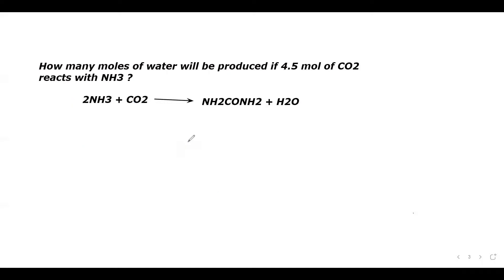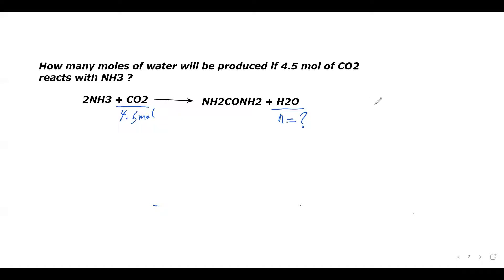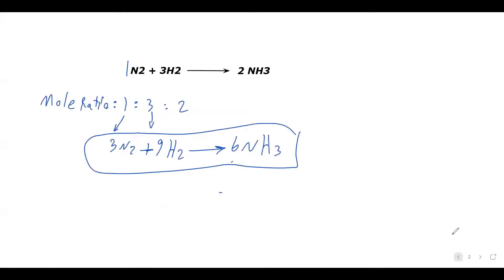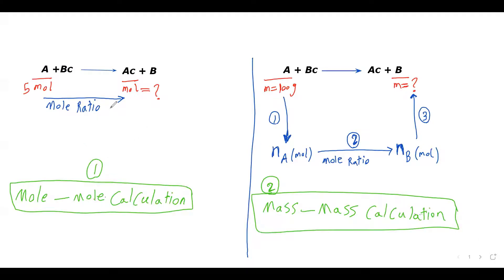Here is the first example. It says: how many moles of water will be produced if 4.5 moles of CO2 reacts with NH3? The balanced chemical equation is given. Our given information is 4.5 moles of CO2, and we need to find the number of moles of H2O. So we are going from moles to moles — this is the first type of problem, the easy one.